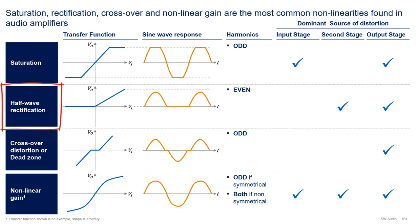Second, we have half-wave rectification, a distortion that only allows the processing of single polarity signals. This distortion is typically a consequence of the rectifying nature of transistors. For example, in a class AB output stage, the output devices can only carry single polarity currents — the NPN can only source current and the PNP can only sink current. Hence, the currents these devices carry are half-wave rectified. Also, to a lesser degree, half-wave rectification is also present in non-complementary second stages when the constant current source is not sized properly.